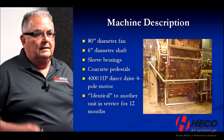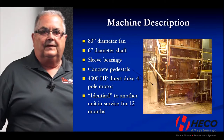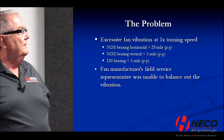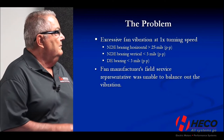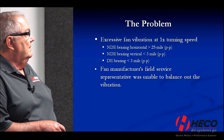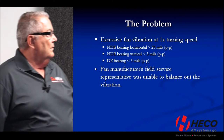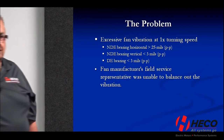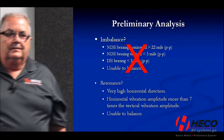They put this second fan in and had a lot of excessive vibration. The field service tech from the fan supplier had been down there commissioning the fan for a number of days, and they called for additional help. The fan had excessive vibration at one times turning speed. The non-drive end bearing horizontal was greater than 25 mils, while the non-drive end bearing vertical was less than 3 mils — very highly directional. The drive-end bearing was also less than 3 mils.